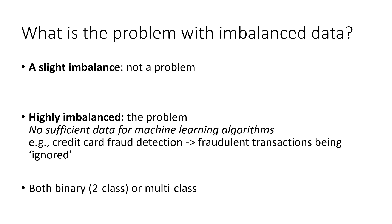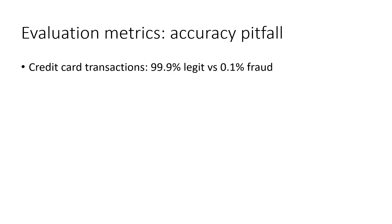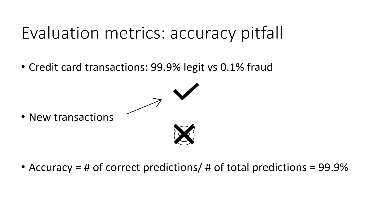After mastering the definition, let's look at how to choose evaluation metrics. This is a critical choice for an imbalanced dataset. We have to be aware of the accuracy pitfall. For the example of credit card fraud detection, a new transaction could be legit and get approved, or fraudulent and get blocked. Assume we set a model to always classify new transactions as legit — so we always approve them. Given that 99.9% of the dataset is all legit, the accuracy is high at 99.9%. But don't forget that our goal is to detect fraud, so such a model is useless.